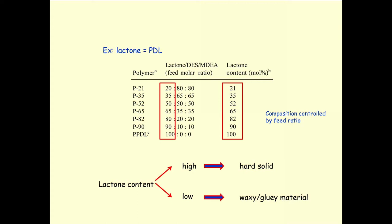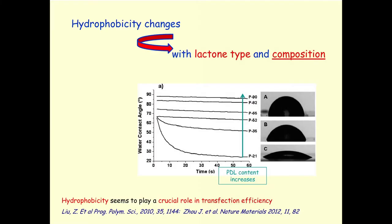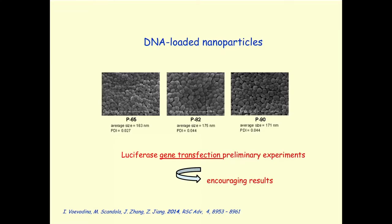By choosing the feed, you decide the composition you want. Depending on lactone content, materials range from hard solids to oily/glue-like substances. By changing the type and amount of lactone, you can tune hydrophilicity from hydrophilic to increasingly hydrophobic. Since hydrophobicity plays an important role in transfection efficiency, we chose the most hydrophobic terpolymers for nanoparticle preparation and DNA loading. Preliminary gene transfection experiments by our US colleagues gave very encouraging results.